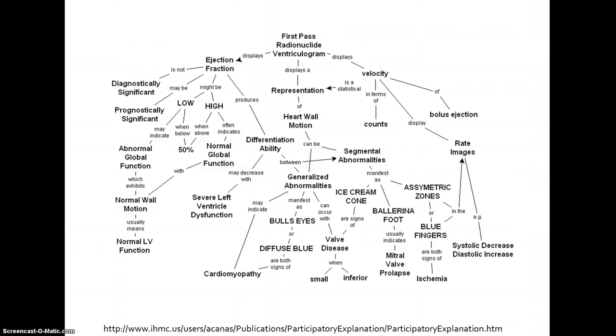This particular concept map is on a very complicated topic—nuclear images for cardiology. The nice thing here is the clarity of the relationships and the links. When we see ejection fraction might be high, which often indicates normal global function, we're seeing a very clear sense of what the relationships are between the concepts that have been generated.